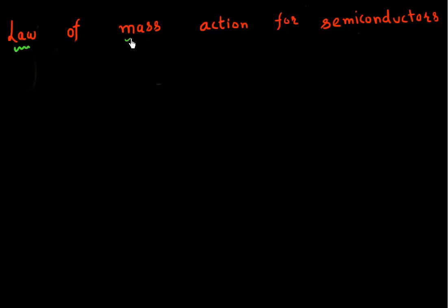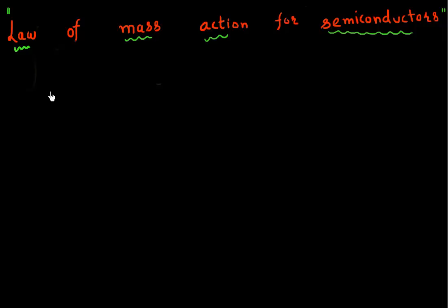Let's talk about the law of mass action for semiconductors in this video. This sounds like a very important law — the law of mass action for semiconductors. Let me state first what it implies, and then we'll derive it using a couple of approaches. What this law states is that the number of electrons in your conduction band multiplied by the number of holes in your valence band is a constant, which just depends upon the temperature.